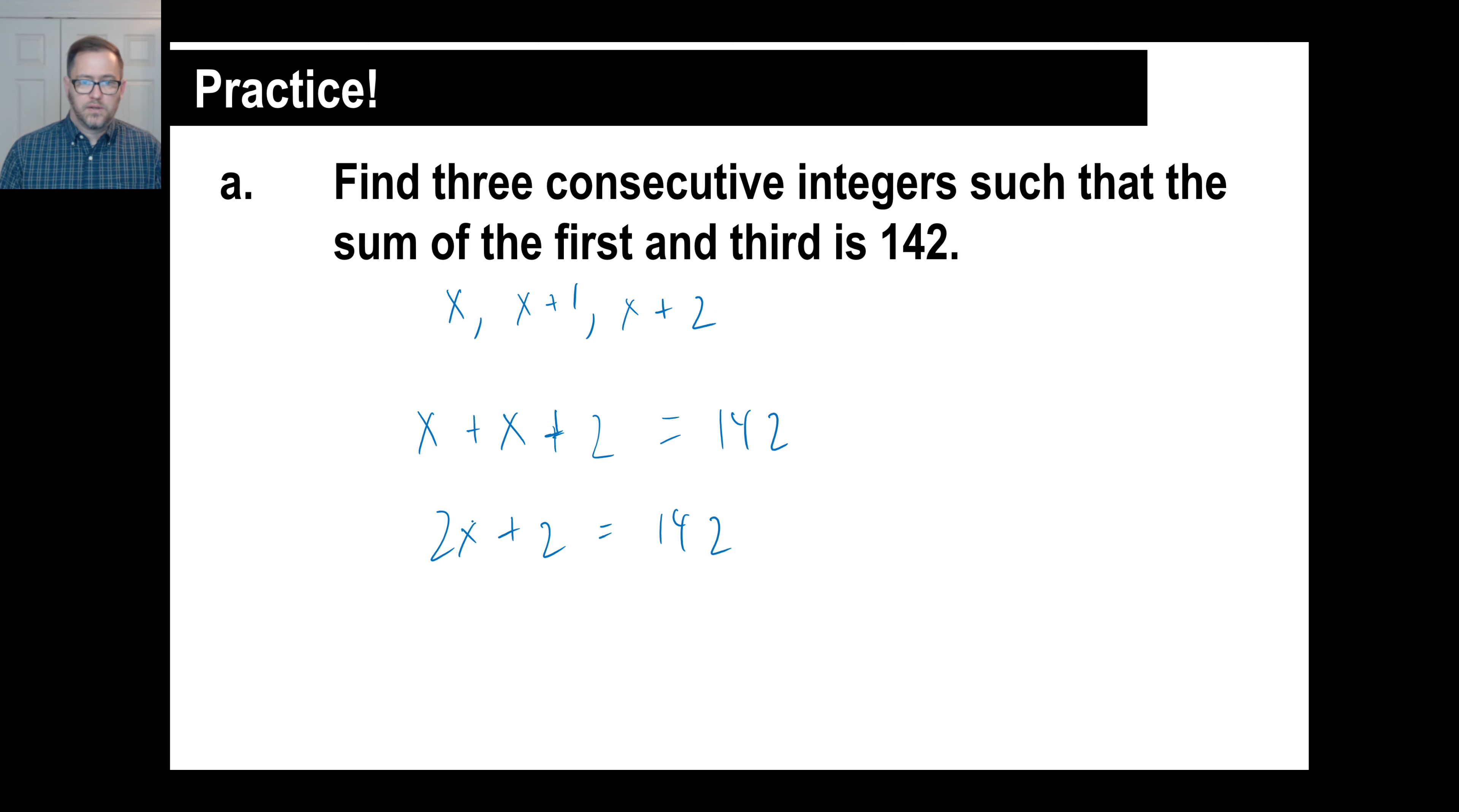So, 2x gets, this 2 gets knocked over, and that's going to be 140. And then, x is 140 divided by 2, which is 70. So, our answer has to be three of those. So, the first is 70, the second is 71, and the third is 72. There you go.